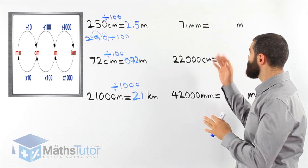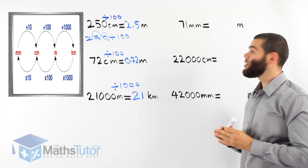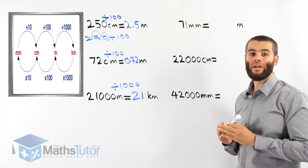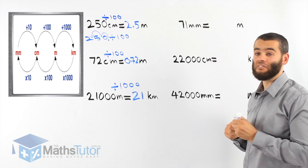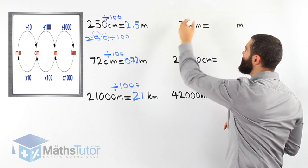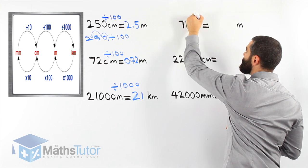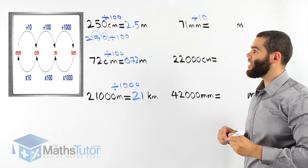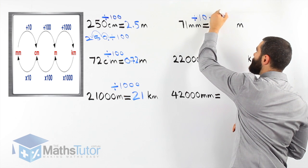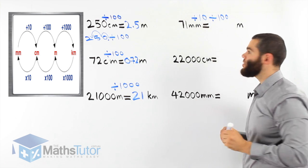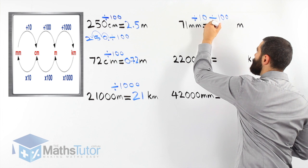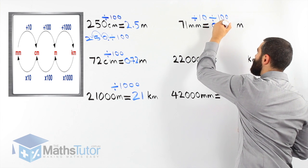The next example: 71 millimetres — we're going to convert to metres. We're going from millimetres all the way to metres, so we have to go past centimetres. 71 millimetres divided by 10 goes to centimetres, then divided by 100 goes from centimetres to metres. 71 divided by 10, then divided by 100, gives 0.071 metres.